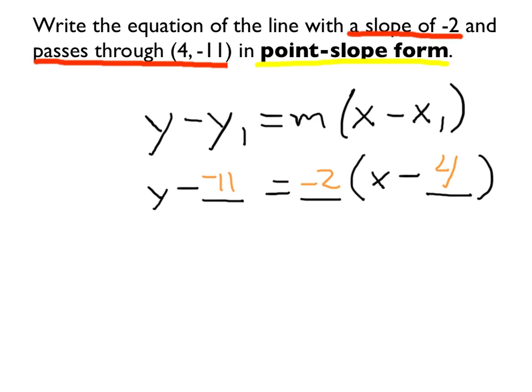And now we can simplify that slightly. I see on the left side we have y minus negative 11. Let's rewrite that. So we have y plus 11 is equal to negative 2 times the quantity x minus 4. So there's point-slope form.